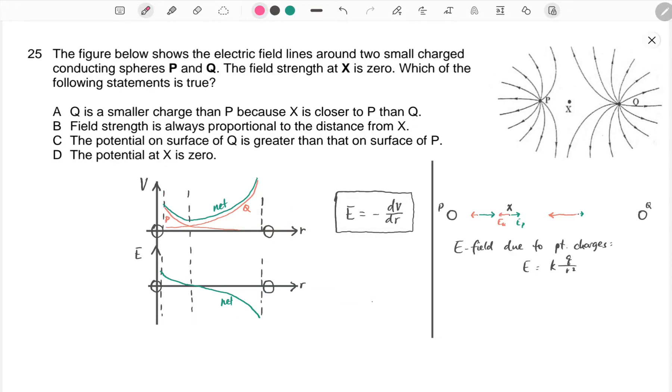In this question, we see an E-field set up by two conducting charged spheres, P and Q. Since the lines all are pointing out from the charged spheres, both are positive.